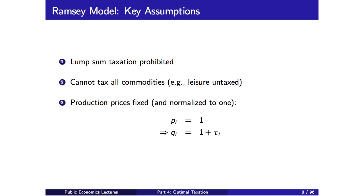The third assumption is that producer prices are fixed — infinitely elastic supply curves — so producers bear none of the incidence of the tax. Just as a normalization, we set all pre-tax prices to one, since that doesn't affect anything. I'll denote by Q_i the post-tax price of good i, which equals 1 plus tau_i, where tau_i is the specific tax on good i. We have one individual in the Ramsey model, so there are no explicit redistributive concerns.